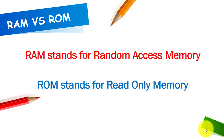ROM stands for read-only memory. In both cases you can see the word memory, so before getting further into detail let's discuss and have an overview of memory in a computing system. Memory is a temporary area for holding data, instructions, and information. It is also called primary storage. Computers usually load the data and instructions from storage into memory and then execute that data. The size of the memory is measured by the number of bytes available for use.